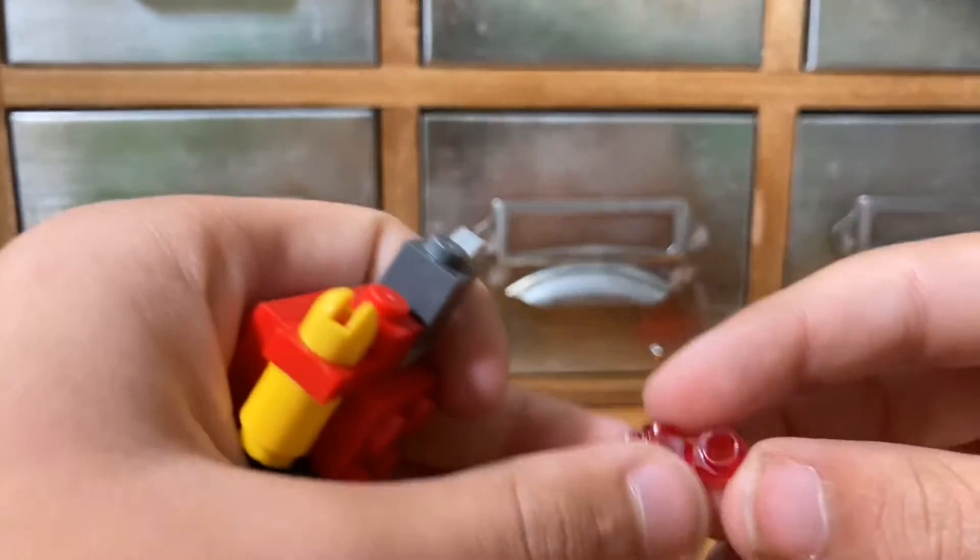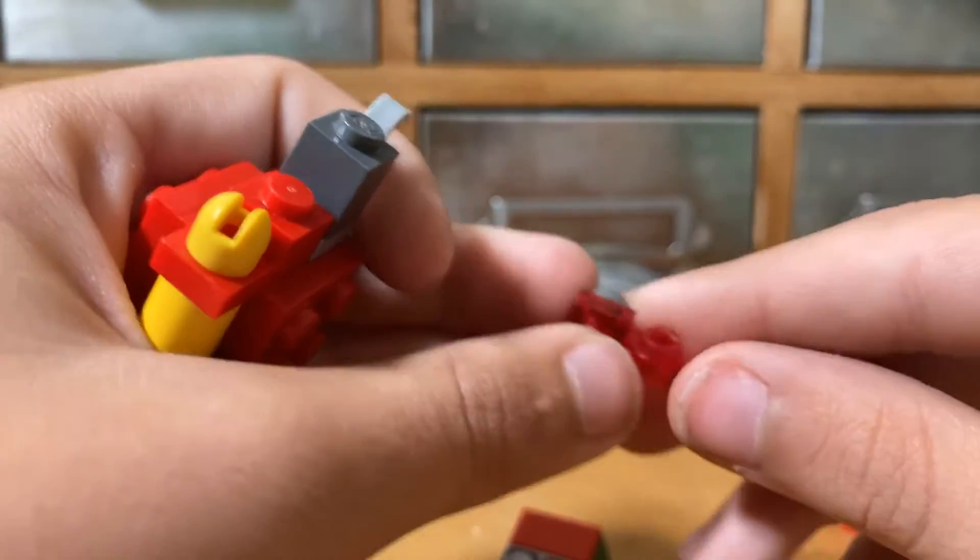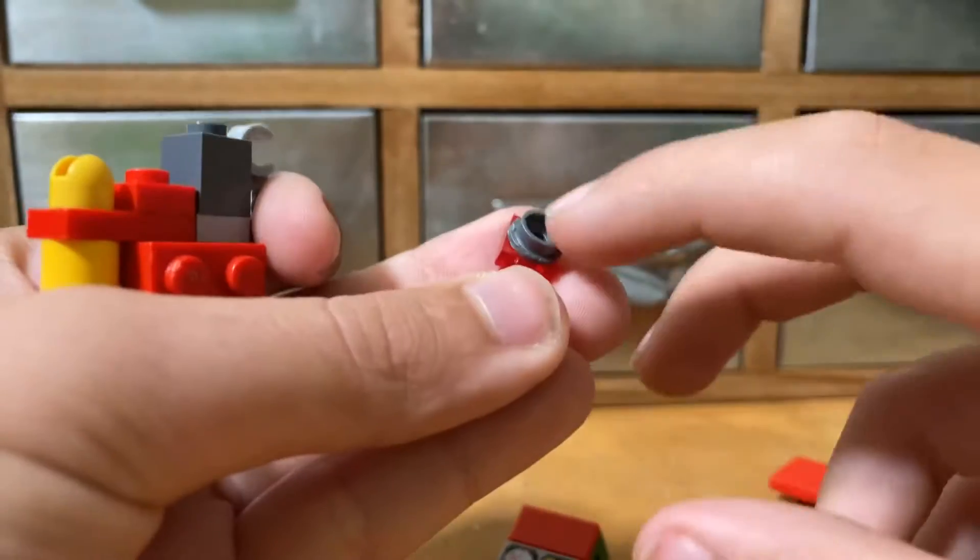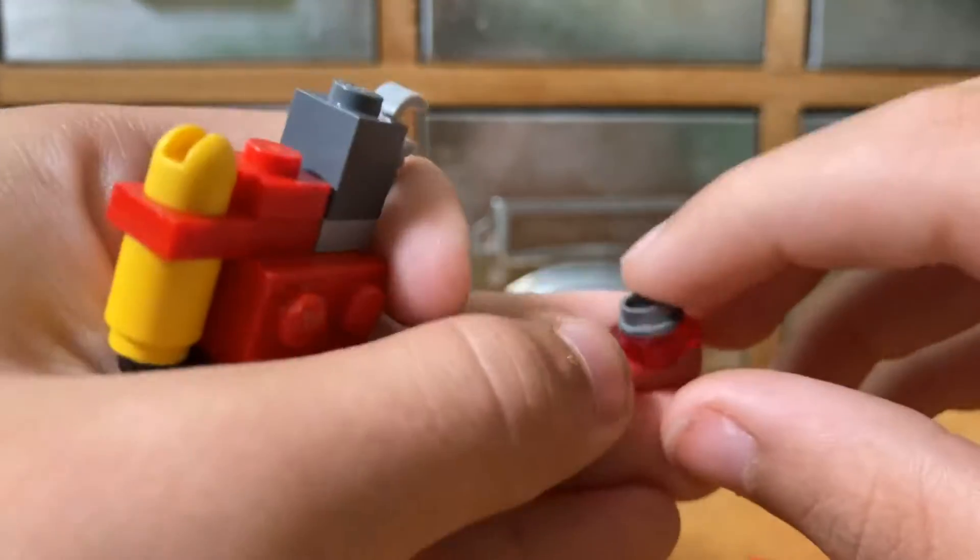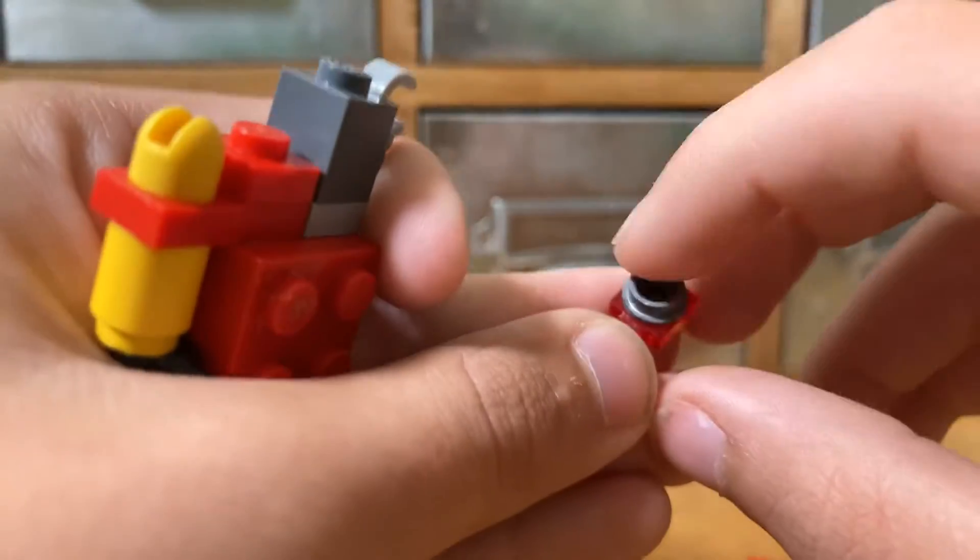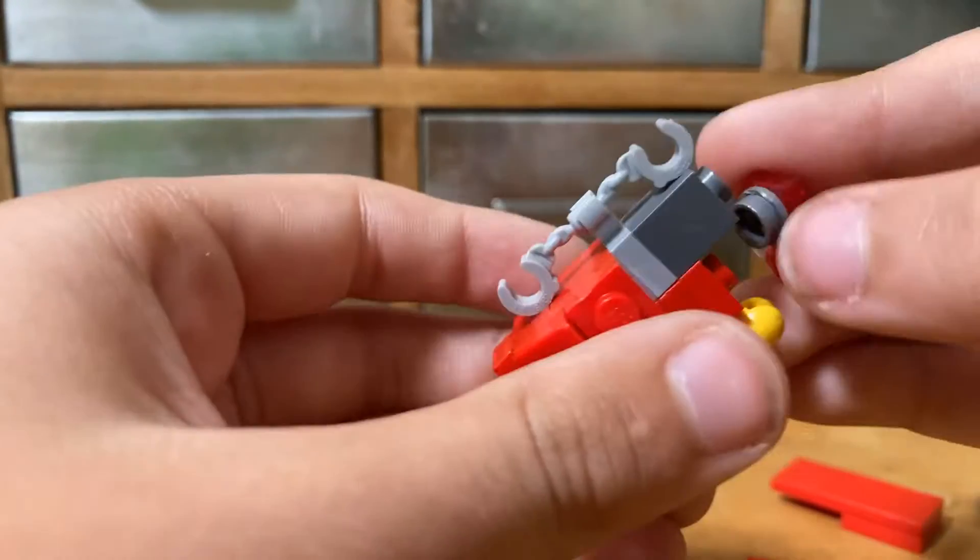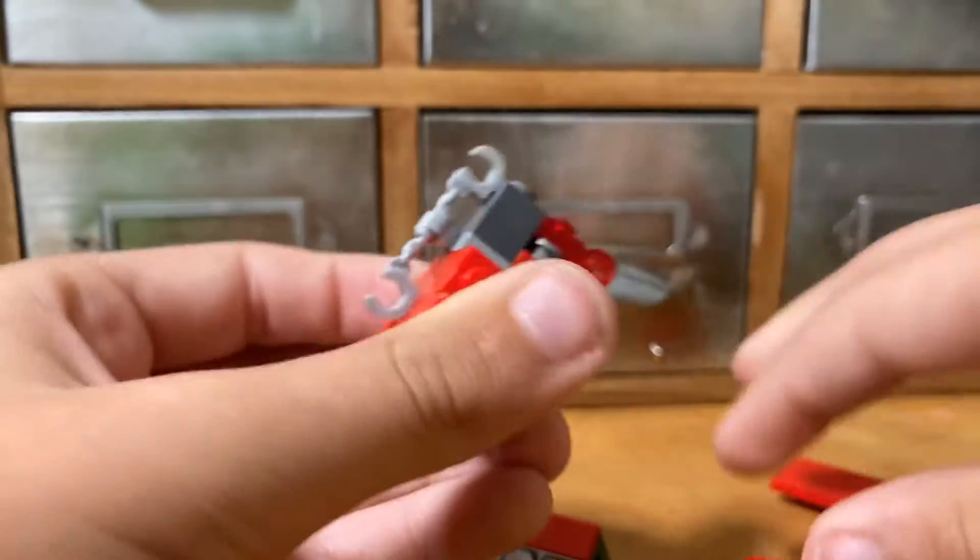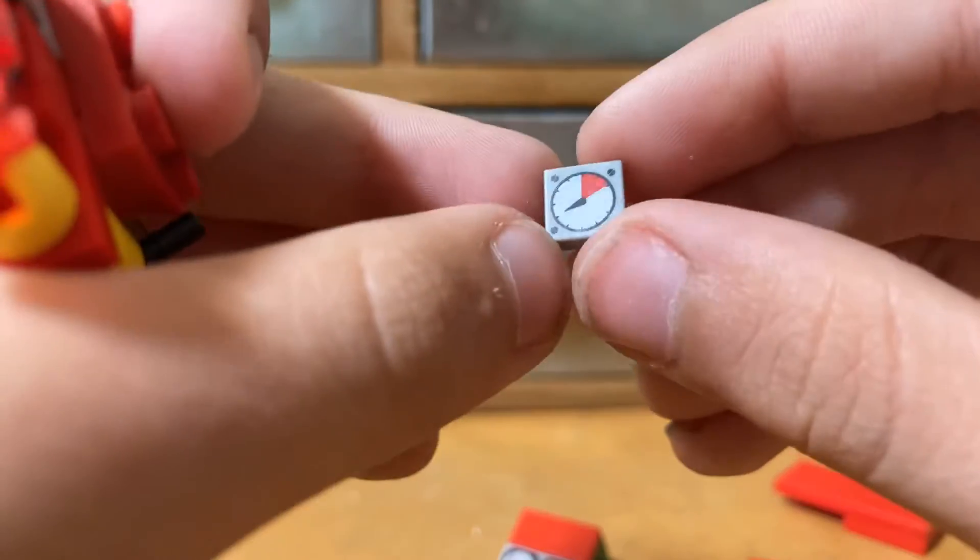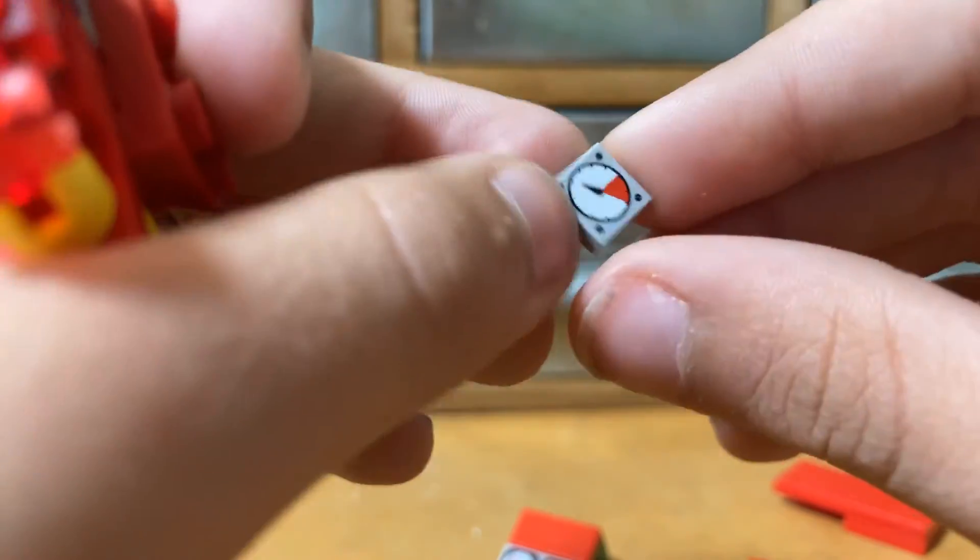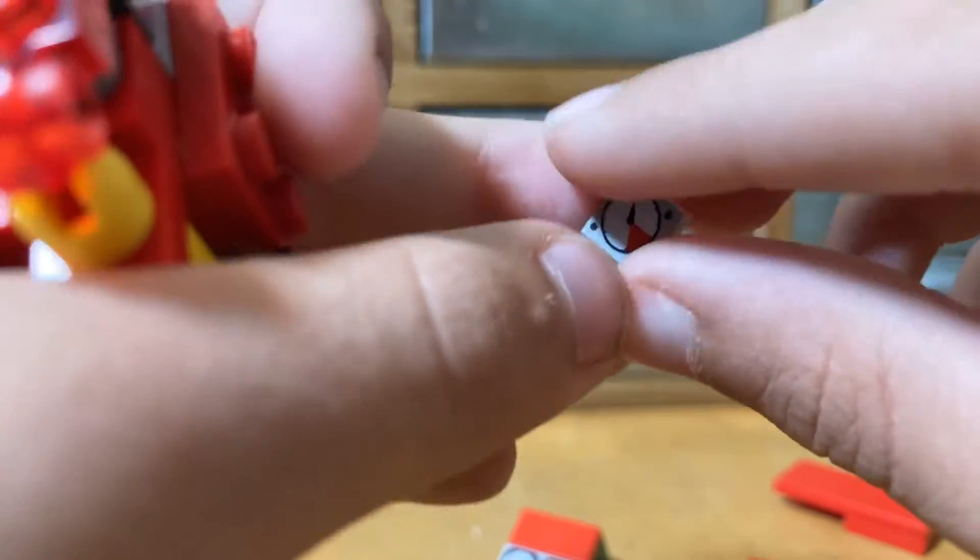Now we get one of these pieces - they can be hard to find. Then you just want to put any type of one by one piece. I used a circle to make it look kind of like a tube. Then we want to get this gauge piece.